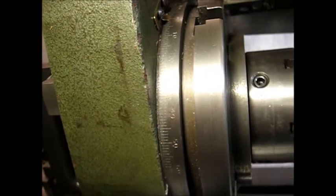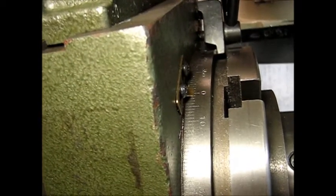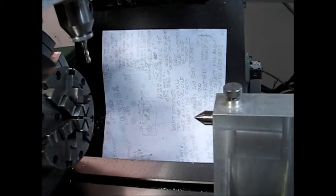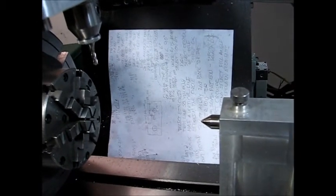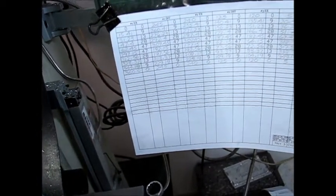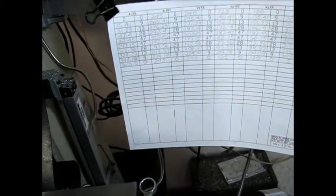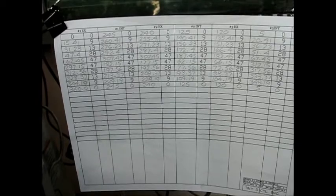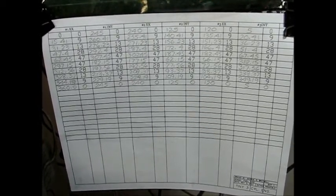I start off by setting my rotary table at zero and then the part is inserted and indicated to get it true. The camshaft profile was created in AutoCAD and then a step-off chart was made. I start at zero and in progressive steps mill down to create the profile on the camshaft.